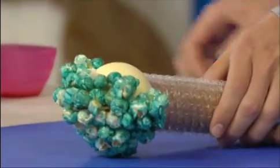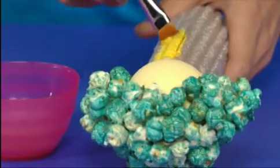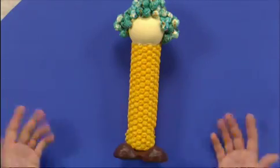When it was dry, I wrapped the body in bubble wrap. I painted it yellow with a mixture of yellow paint and glue, and it really looks like corn on the cob.